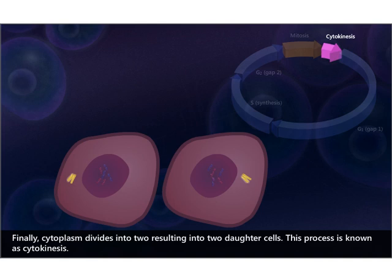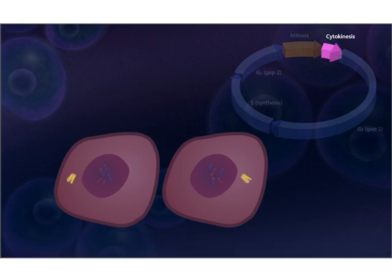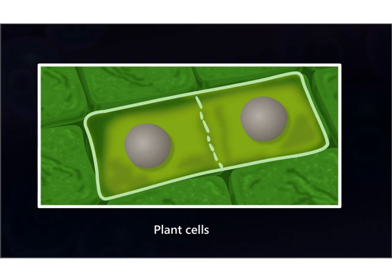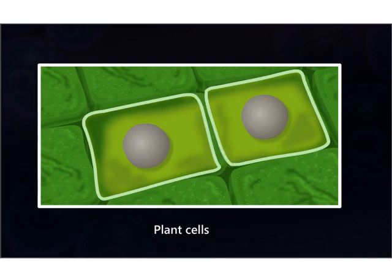This process is called cytokinesis. Since plant cell walls cannot be constricted by actin fibers, vesicles form an expanding membrane partition called the cell plate. Similar to animal cells, the cell finally divides into two daughter cells.